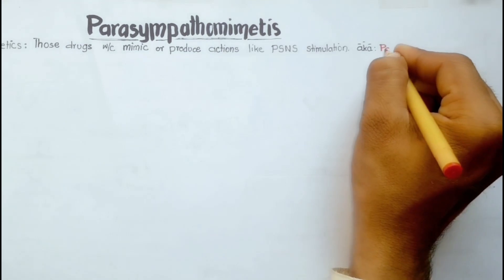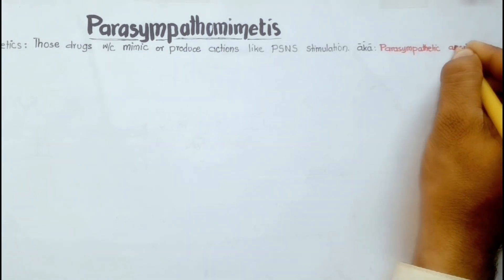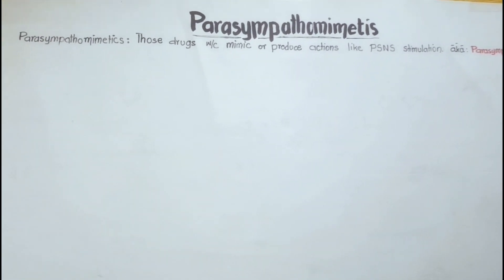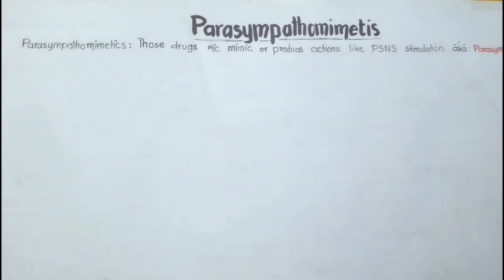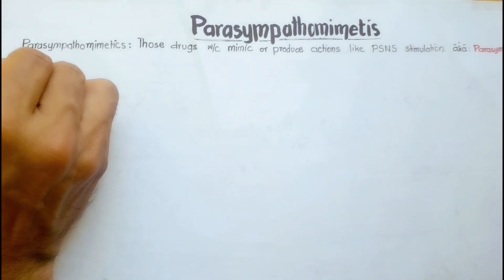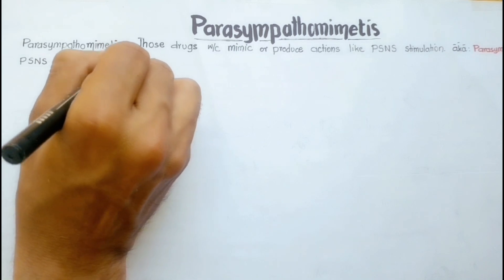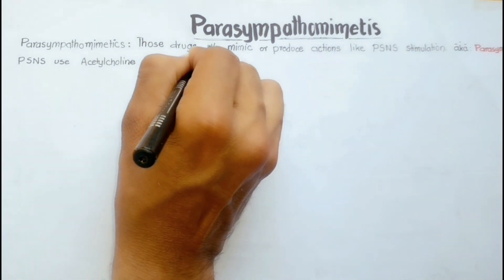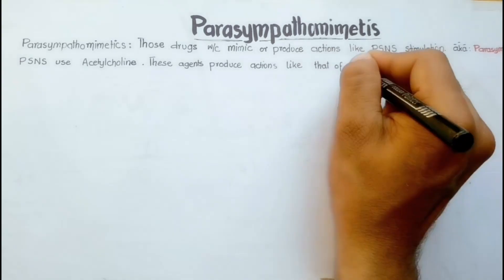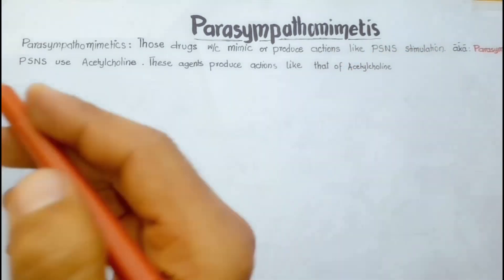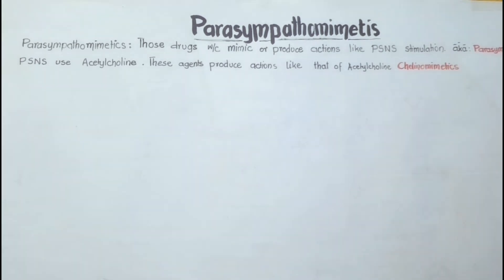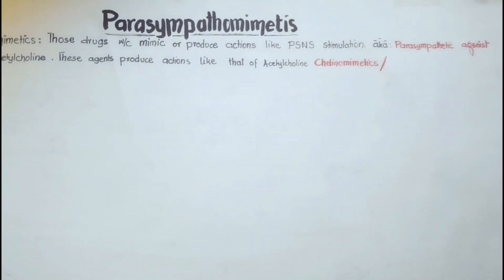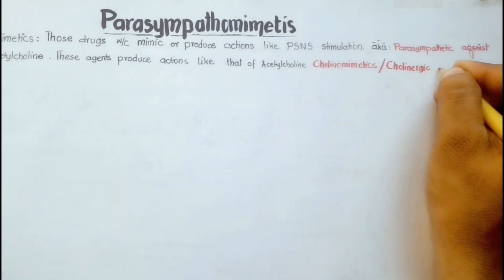That's why they are also called parasympathetic agonists. The parasympathetic nervous system uses acetylcholine as the primary neurotransmitter, which is an acetylated choline molecule responsible for all parasympathetic nervous stimulations. In the same way, these agents produce actions like that of acetylcholine, so they are also called cholinomimetics or cholinergic agonists because these agents stimulate cholinergic receptors.